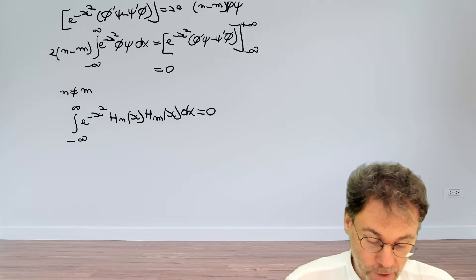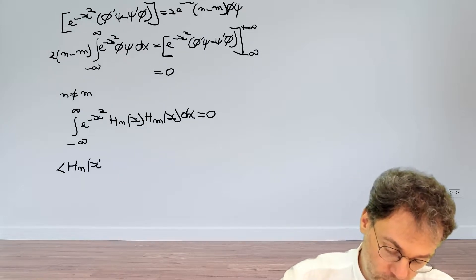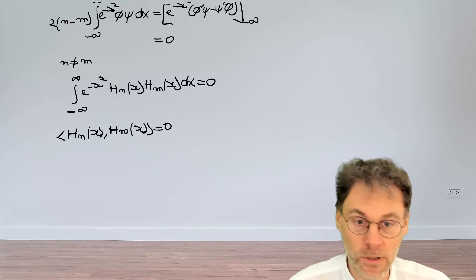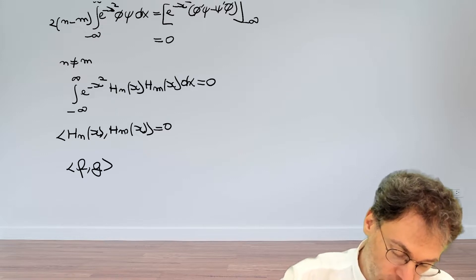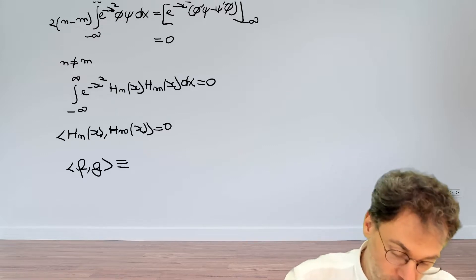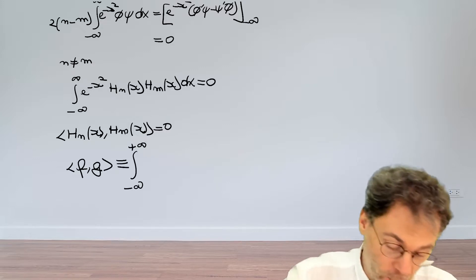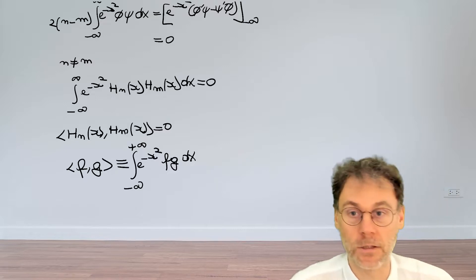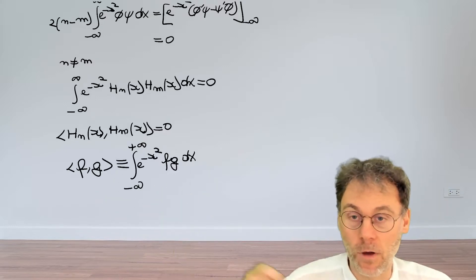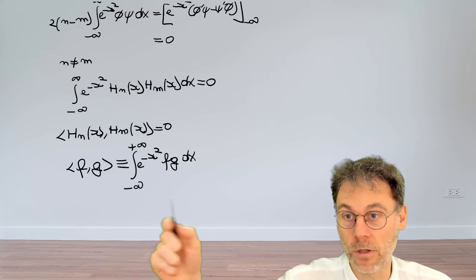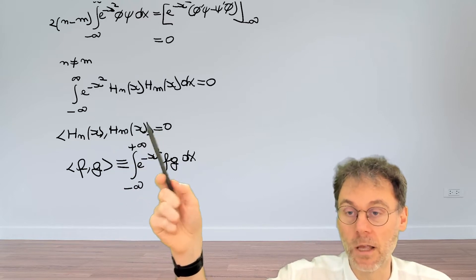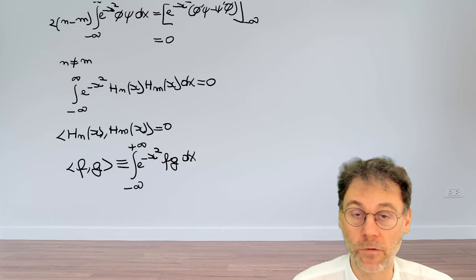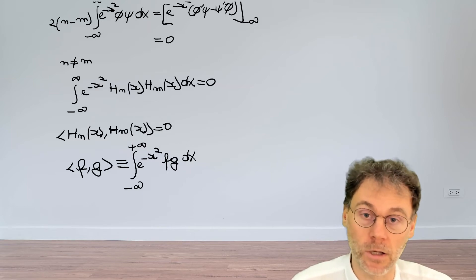Is this an orthogonality relationship? You can define a scalar product between two functions as the integral from −∞ to +∞ of the product of the two functions multiplied by the weighting factor e^(−x²). Scalar products can be defined however you see fit, and defining it this way is useful when working with Hermite polynomials, because the orthogonality relationship ⟨H_m, H_n⟩ = 0 for m ≠ n holds. This will be useful when we want to expand functions into a series of Hermite polynomials.